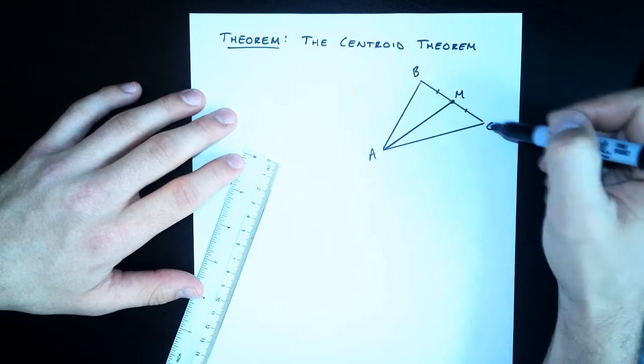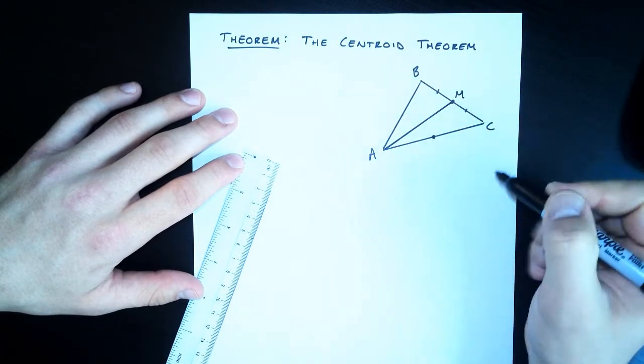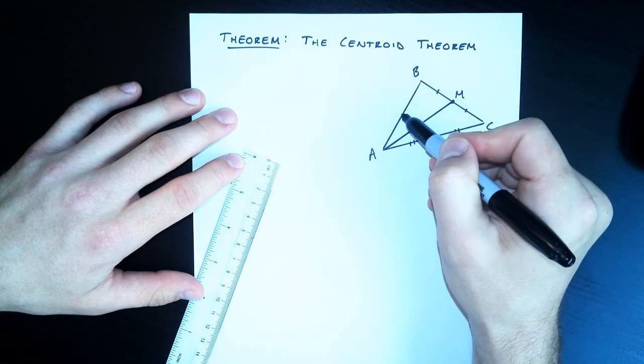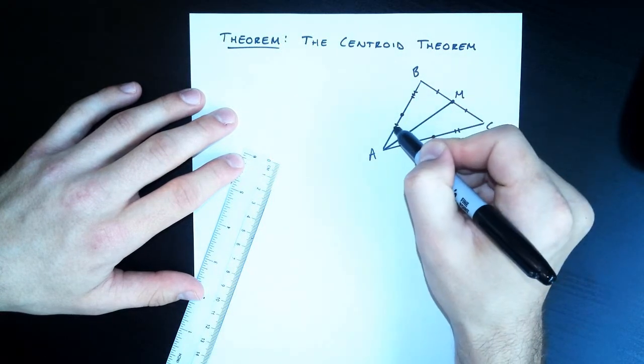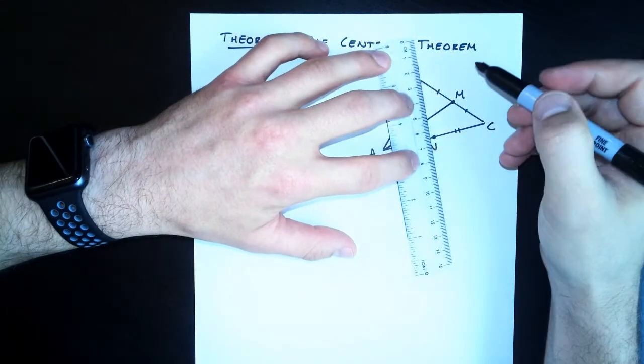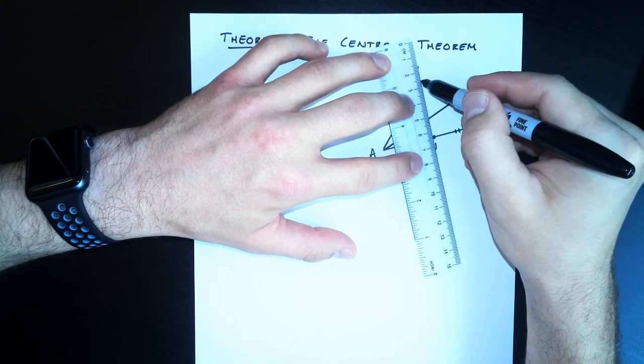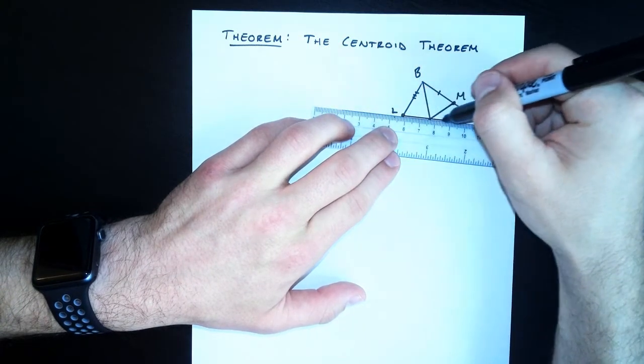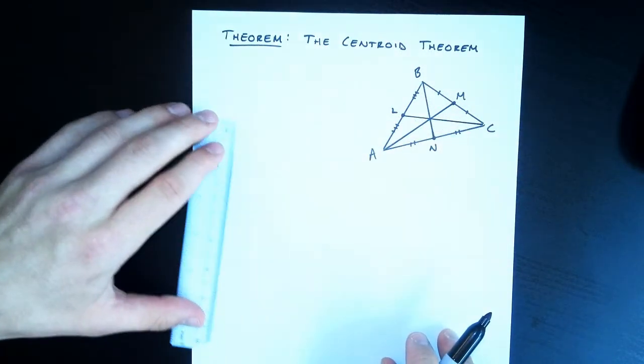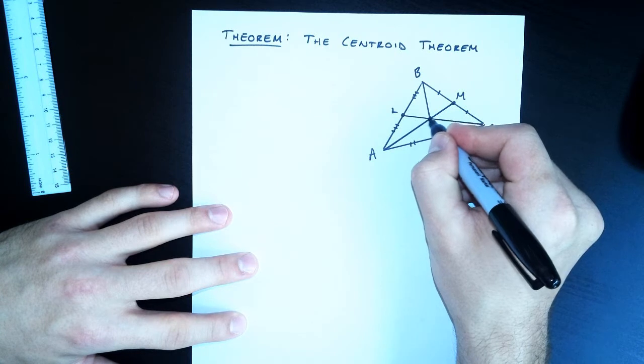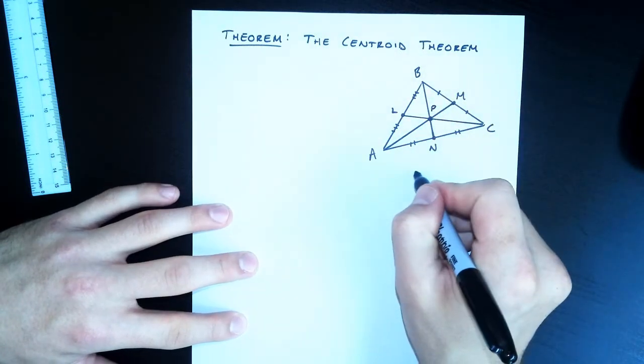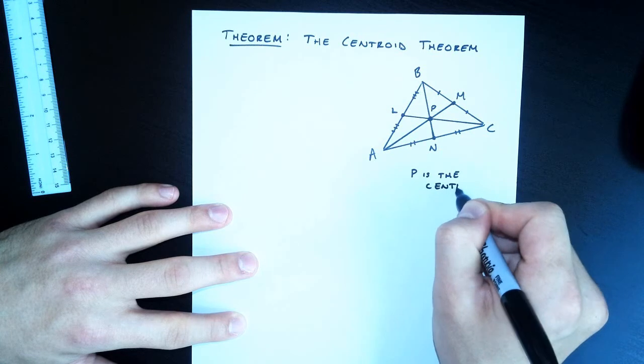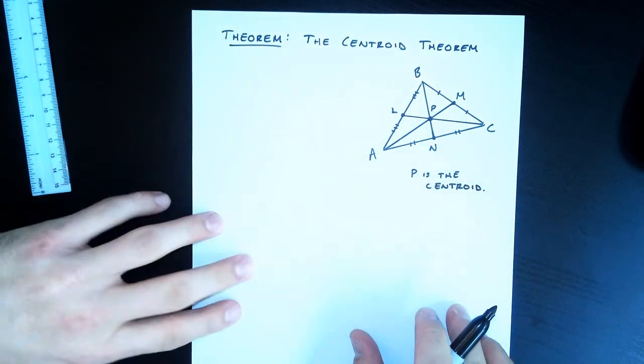We can do the same for our other two vertices. We'll find the midpoint of this side here, that splits that into two congruent parts, and the same for our last side, the midpoint, two congruent segments here. If I connect those together, we get our other two medians. The three medians of a triangle are concurrent, meaning they all intersect at the same point. Their common point of intersection here in the middle, let's call that point P. P is the centroid.